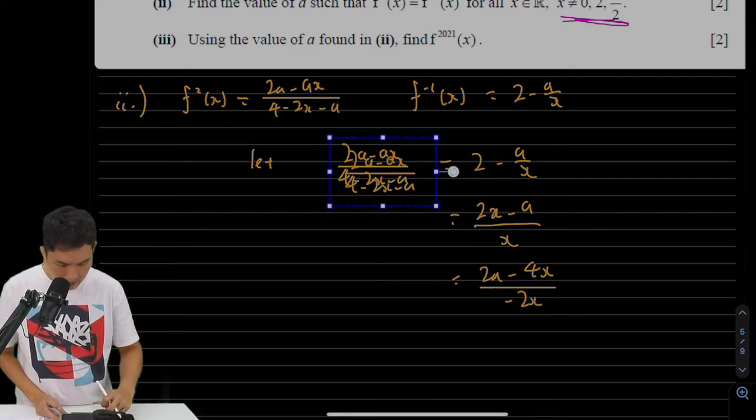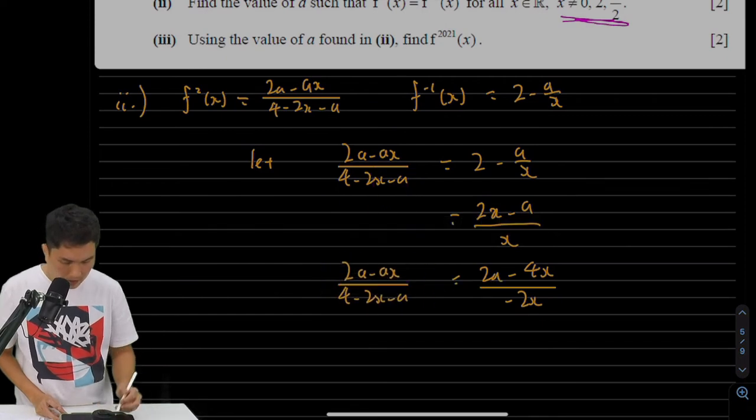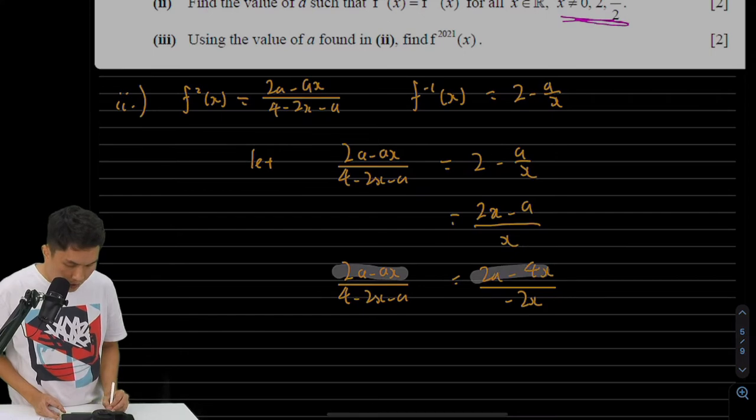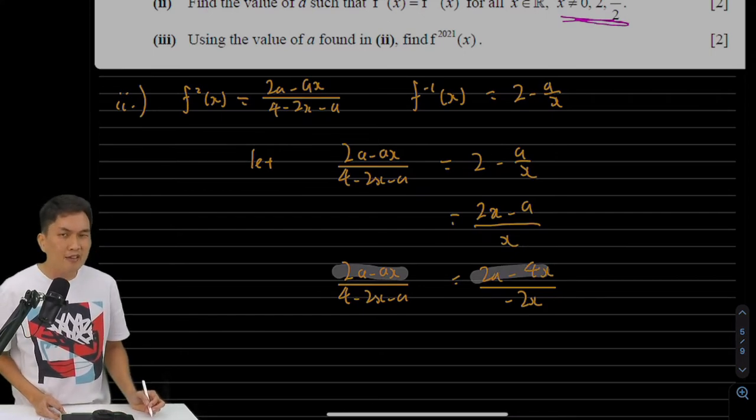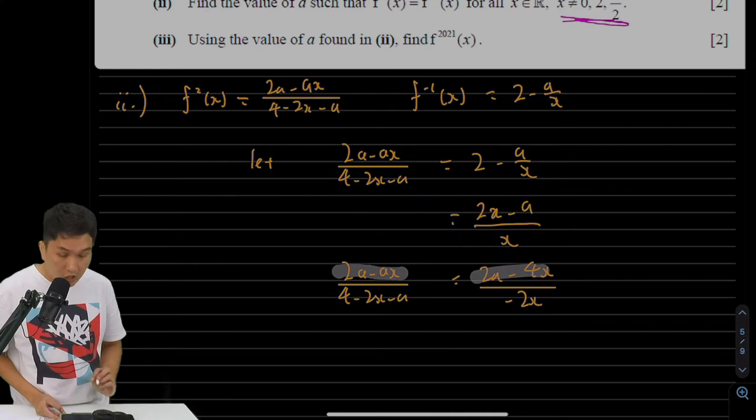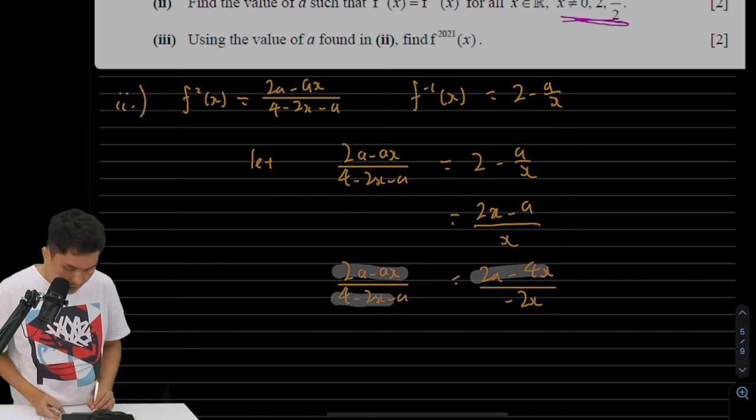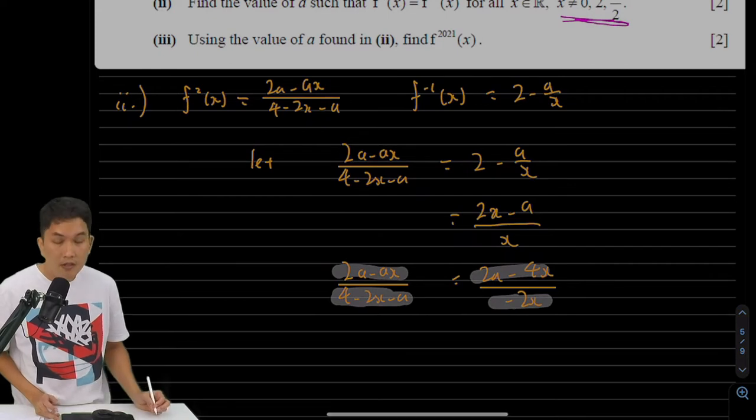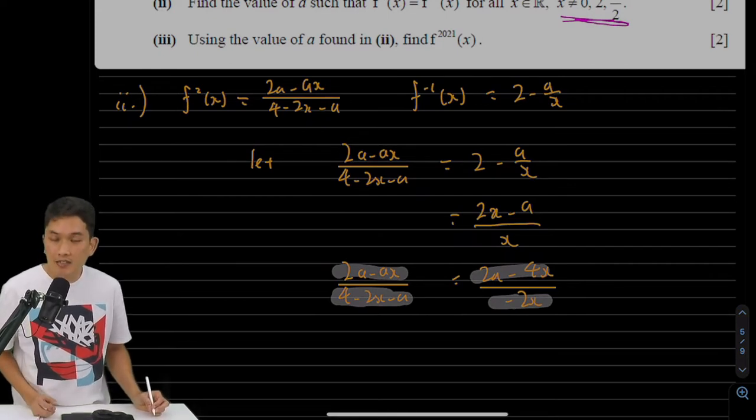And then if we compare it with the left-hand side, we start to see that this is 2a minus ax, this is 2a minus 4x. So a could possibly be 4. Let's check the denominator. If a is 4, this thing at the bottom is just negative 2x, which is what I have here. So by observation, a is equal to 4.